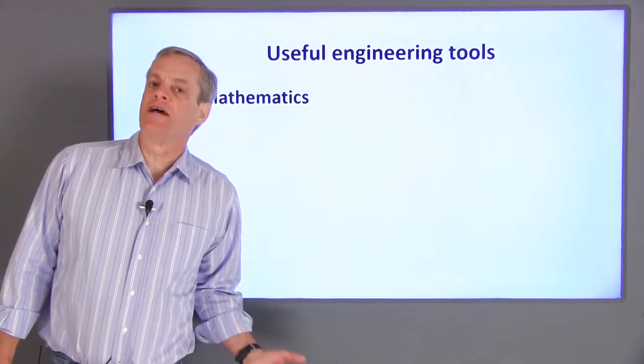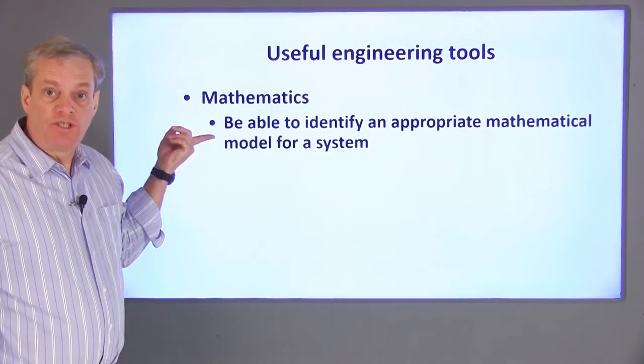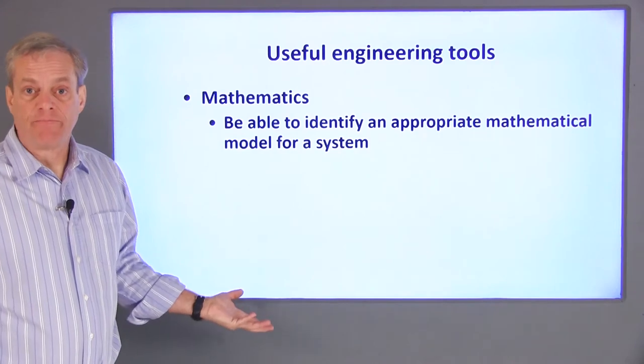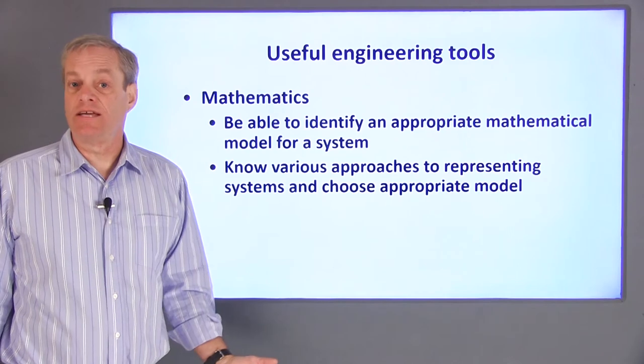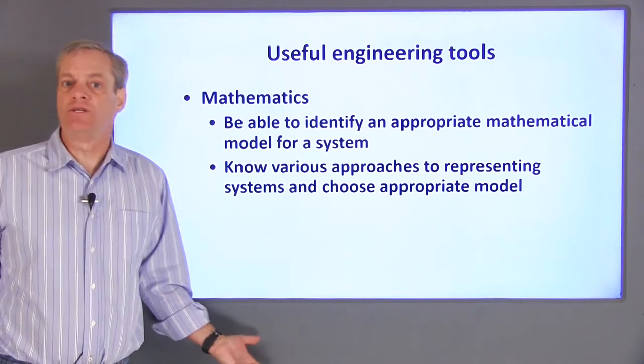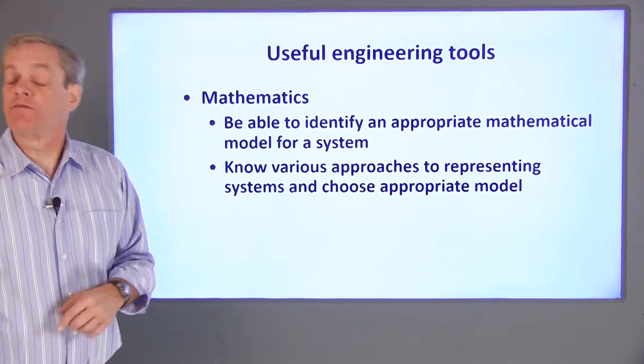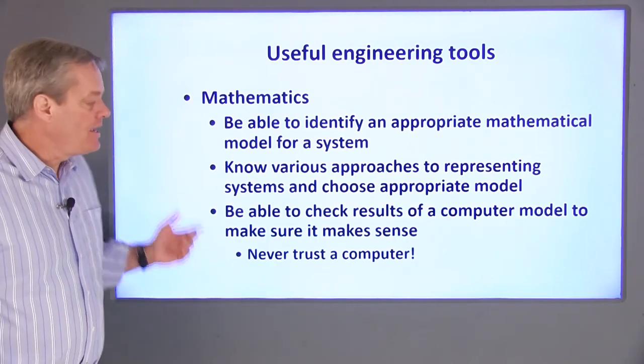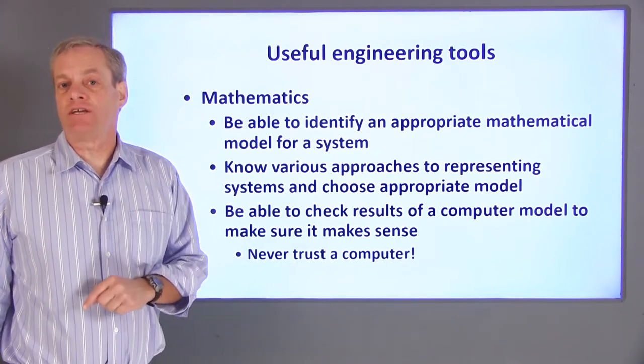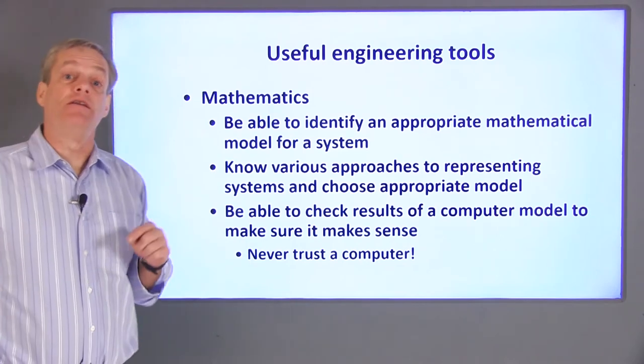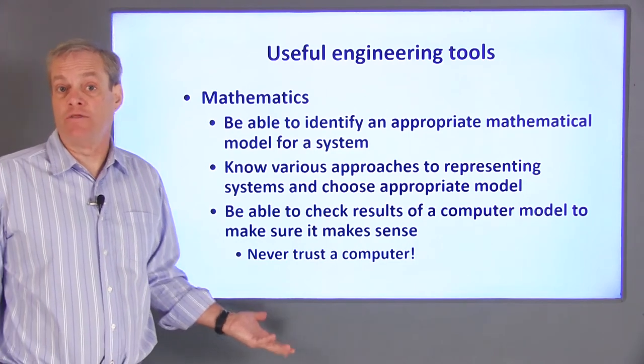The most important aspect of engineering modeling and analysis is mathematics. You'll need to be able to generate an appropriate mathematical model for a system. This requires you to be proficient in a variety of mathematical analysis techniques and to be able to choose the appropriate mathematical model for a set of measured data. An analogy would be knowing when to use a hammer versus a screwdriver. Even if you use a computer model to predict the system response, you still need to be able to check the results of your model against expectations. Never trust the results of a computer simulation unless you perform some simple checks on those results.